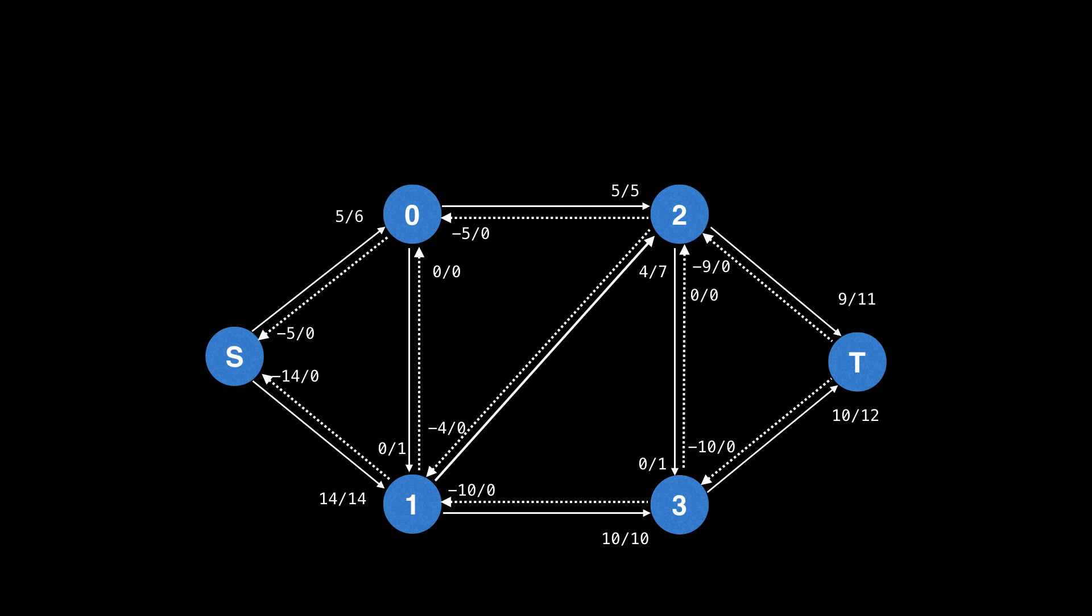If you now inspect the flow graph, there are no more paths with a remaining capacity with all values greater than or equal to four from s to t. So half the value of delta in two. However, there are also no paths with a remaining capacity of all two or more. So we need to halve the value of delta again. So now delta is equal to one.